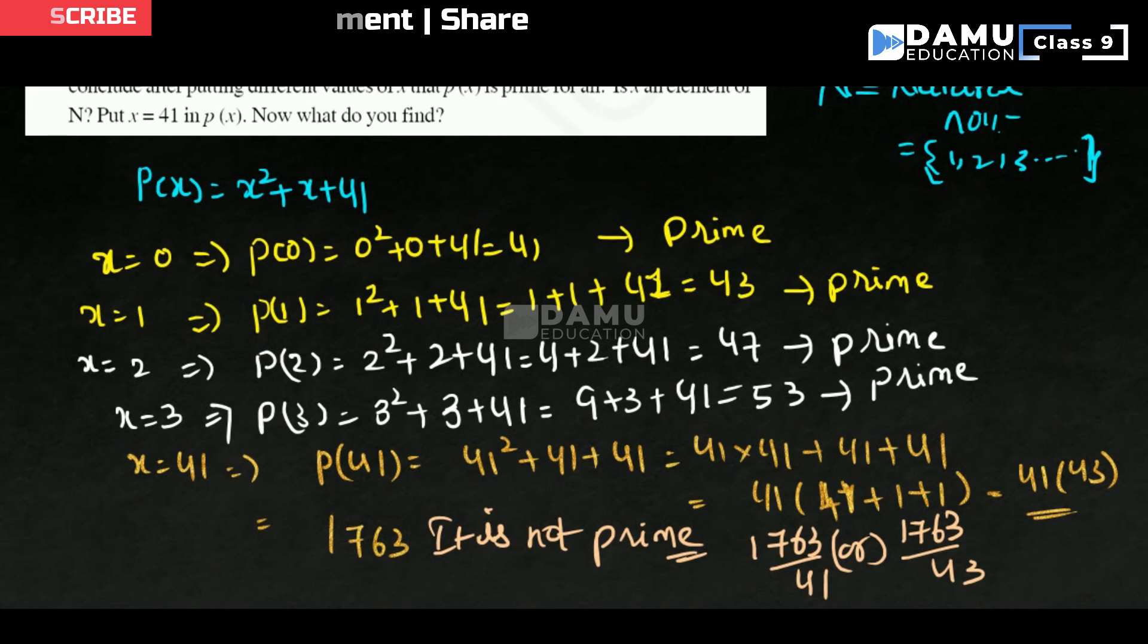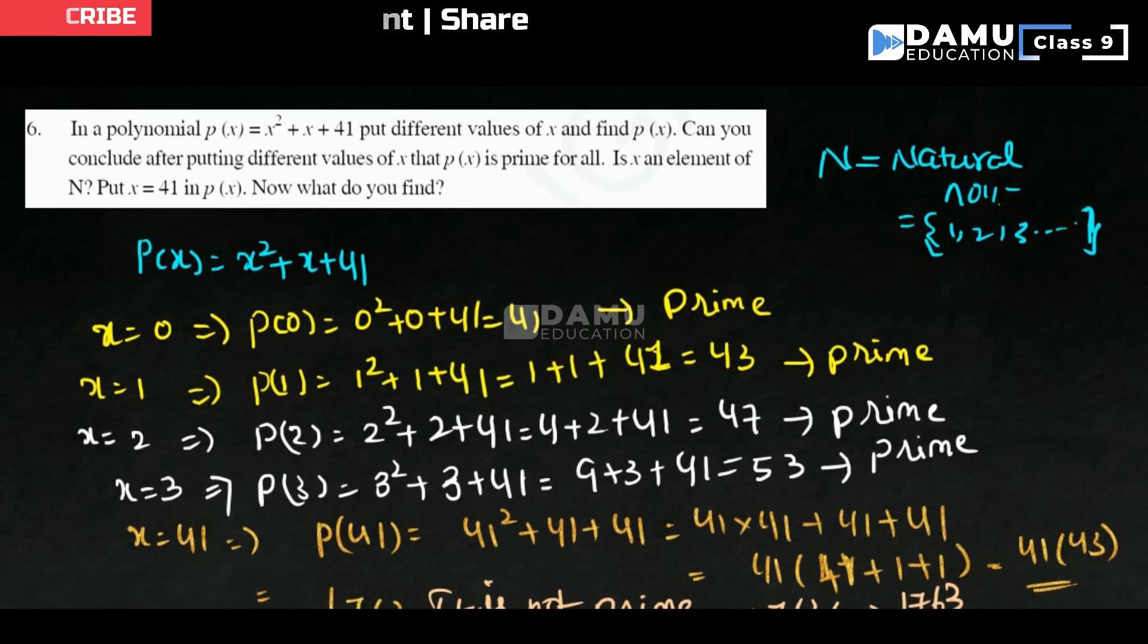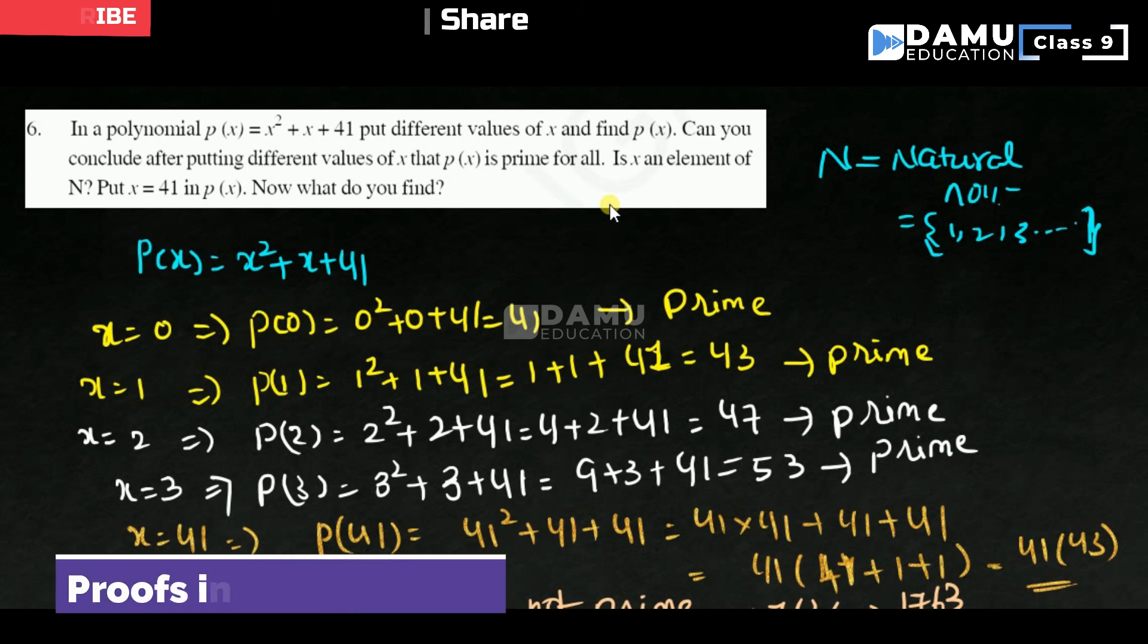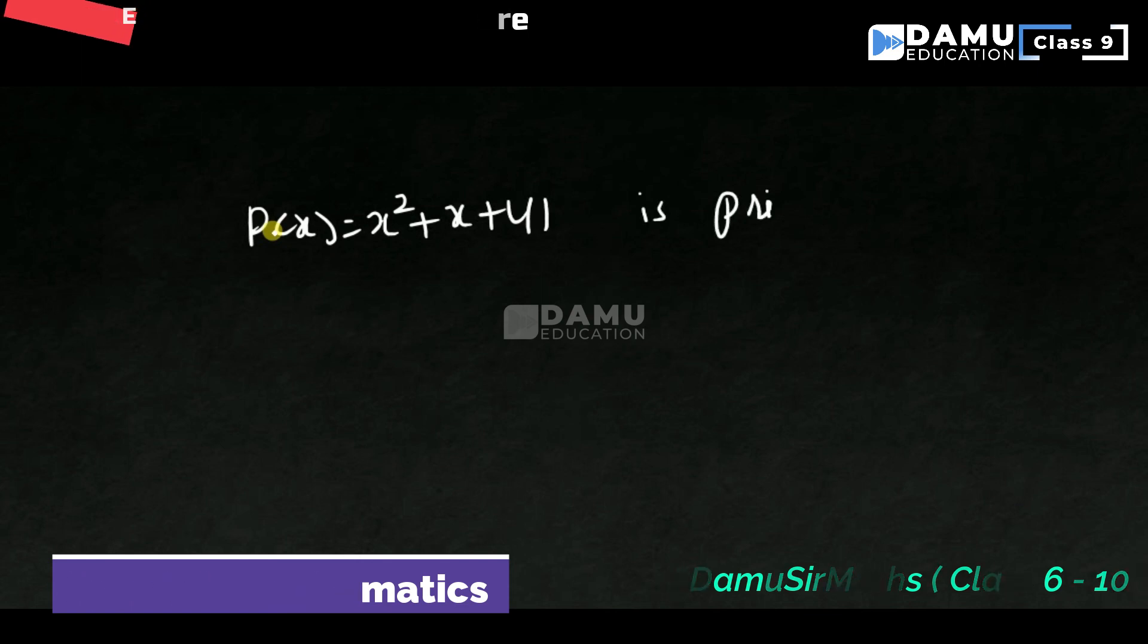So this is not a prime number. That means in this case, this polynomial, the conjecture what they are given here is therefore, what you can say here is, this conjecture P(x) is a prime is false. So P(x), what they are given, x square plus x plus 41 is a prime, they are telling that is false.